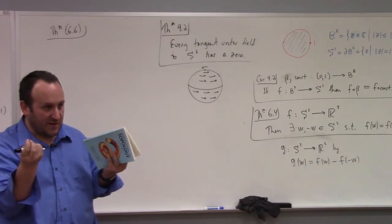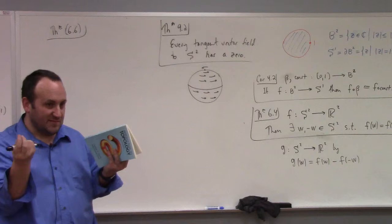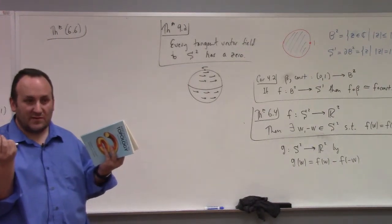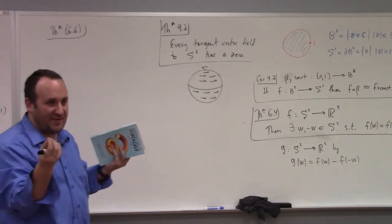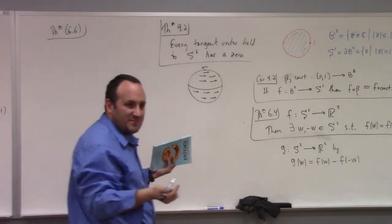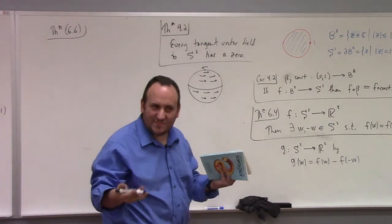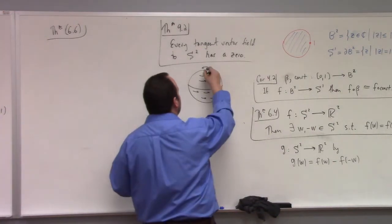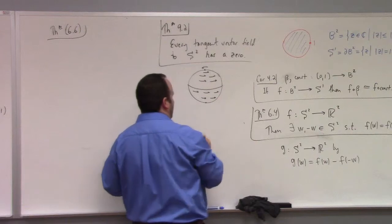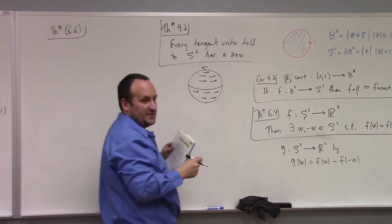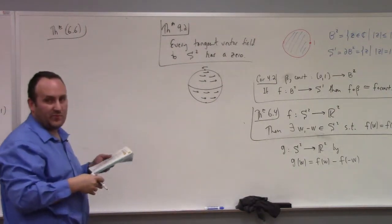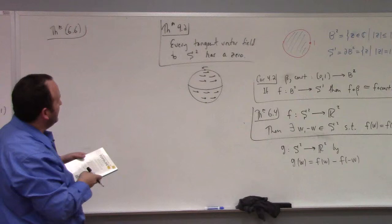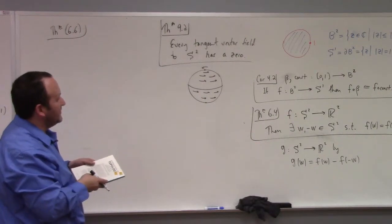So the directions are not at odds because of continuity. That's a heuristic explanation for why the theorem is true. The example I've pictured has zeros at the north and south poles, but Theorem 9.2 says that always happens — any tangent vector field has a zero.